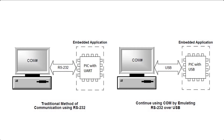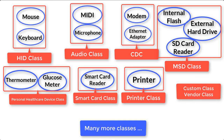Many devices are still using RS-232 as their main communication protocol, like GSM or GPS modules. So if you need to communicate with a PC and you don't want to rewrite the PC software, then some sort of serial to USB converter is required. There are many types of USB communication classes. The functionality of a USB device is defined by a class code, which is used to identify a device's functionality and to nominally load a device driver based on that functionality.